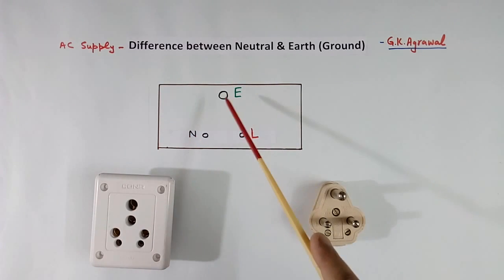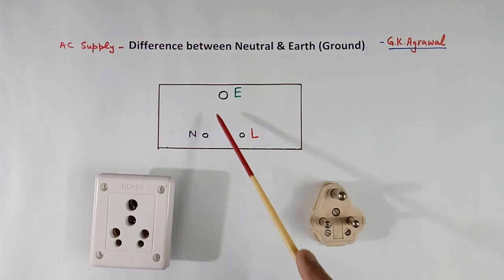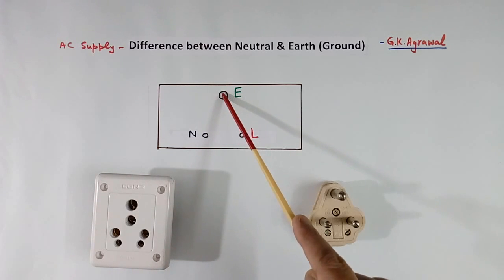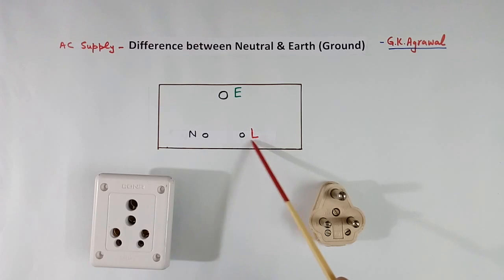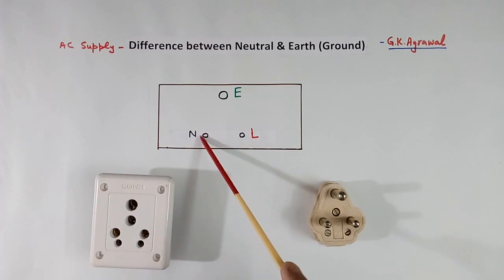Here I have shown one wall socket which has 3 terminals. The big one is earth, the right one is called line, and the left one is called neutral.